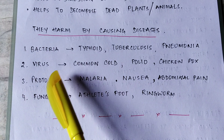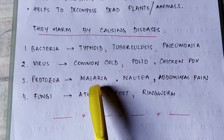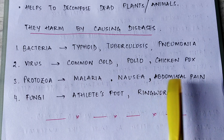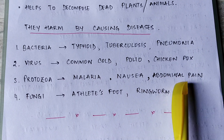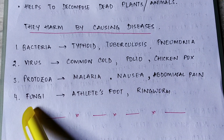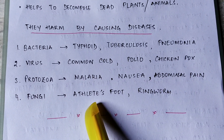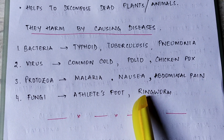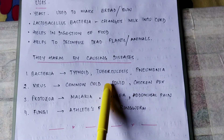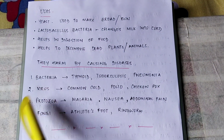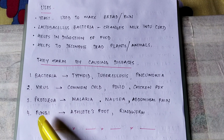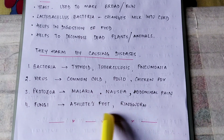Protozoa causes malaria, nausea, abdominal pain, and bloating. Fungi causes athlete's foot and ringworm. These are some examples of diseases caused by different types of microbes.